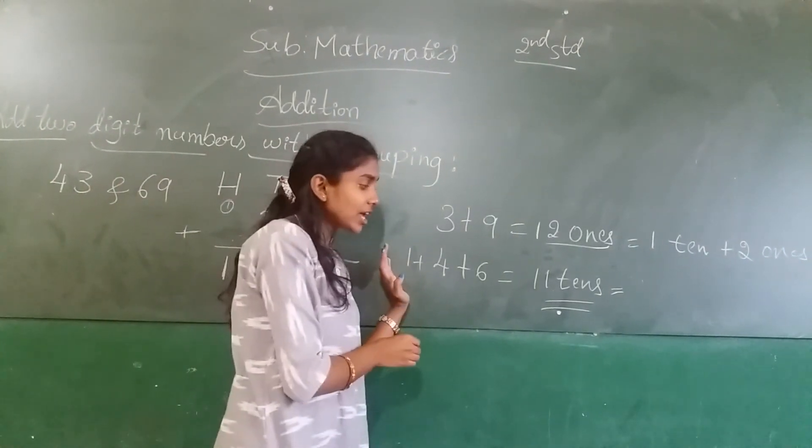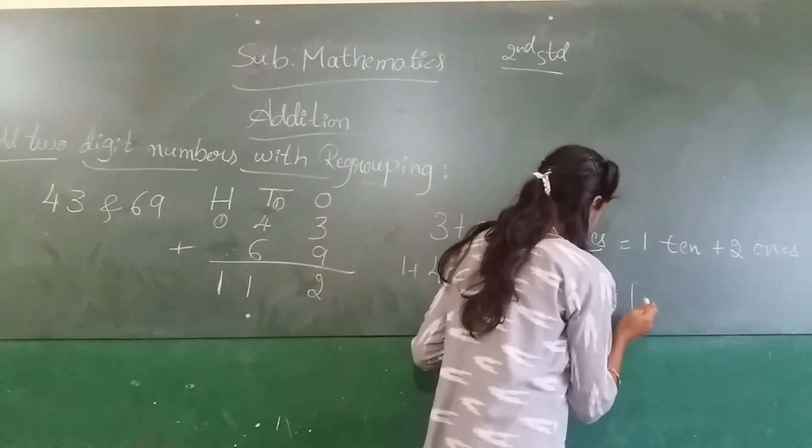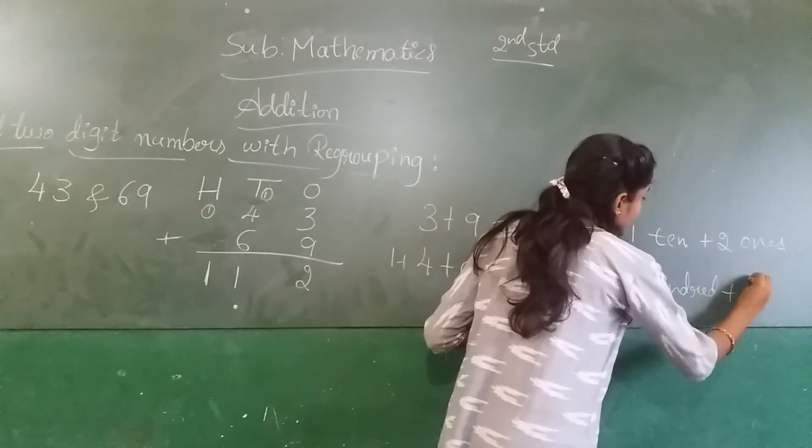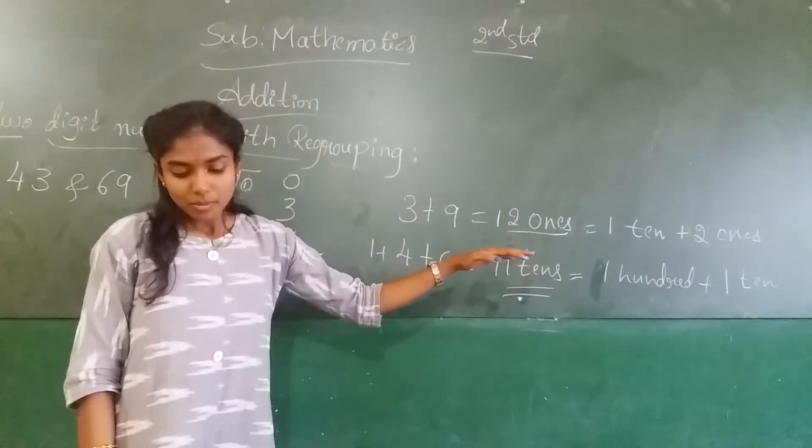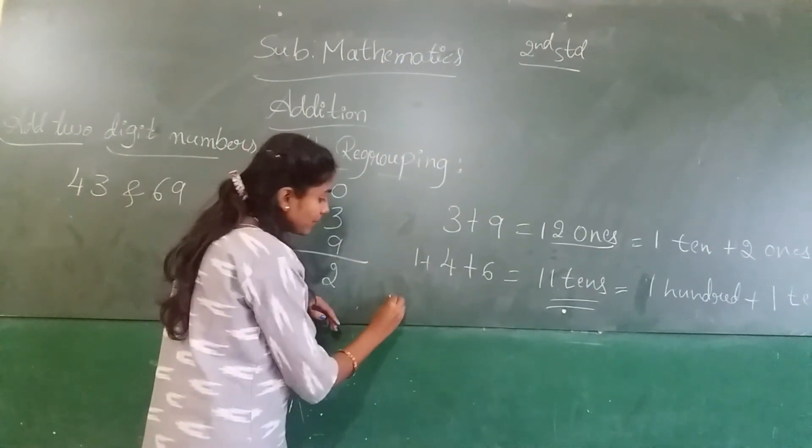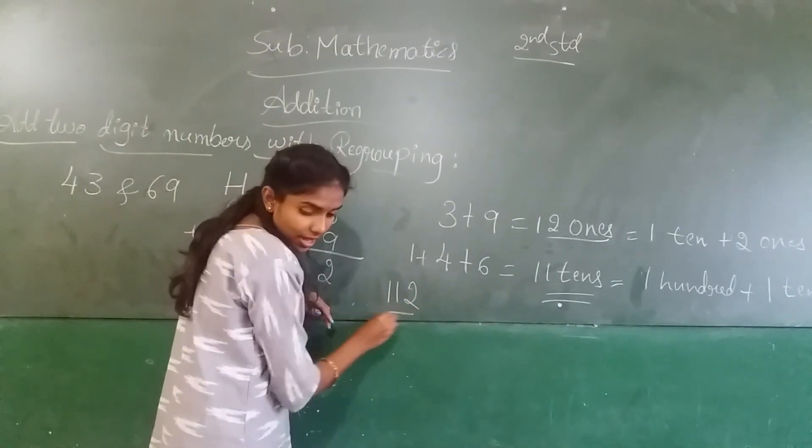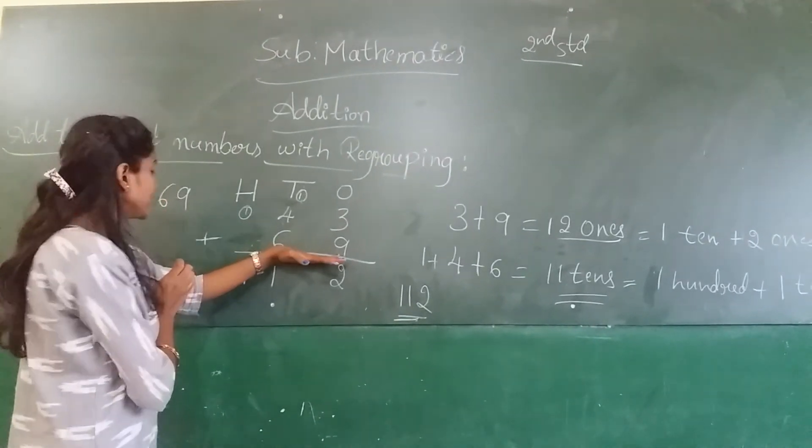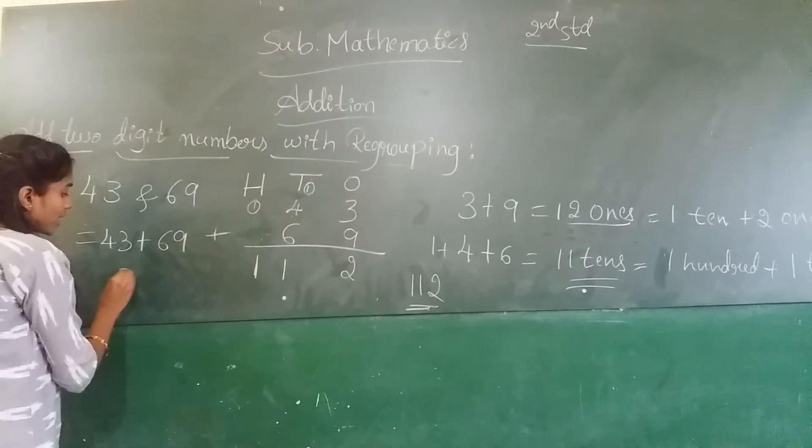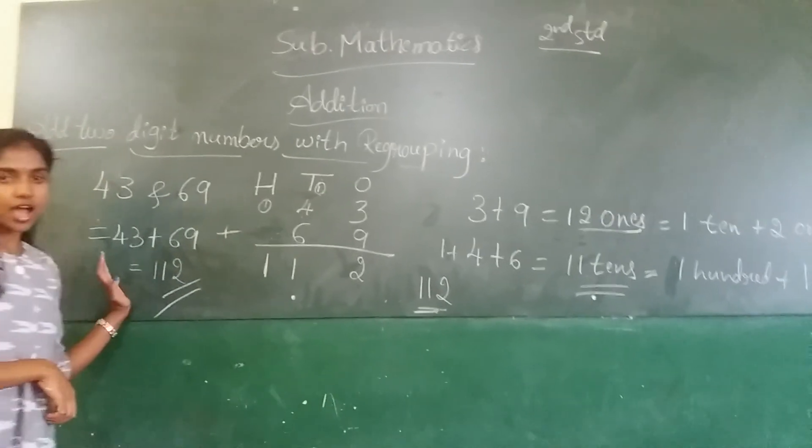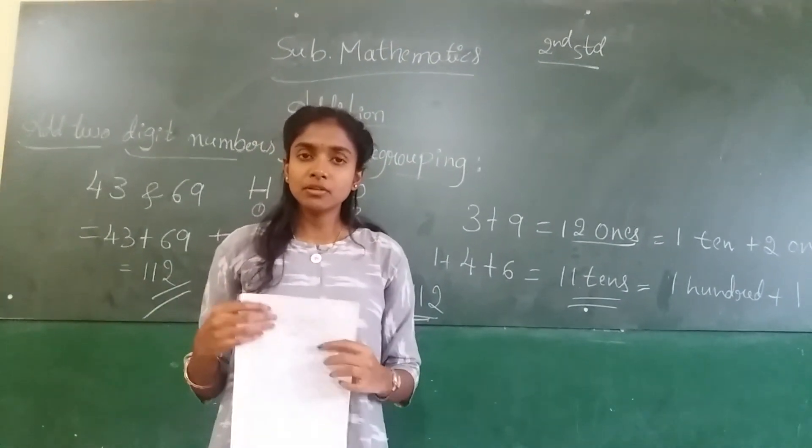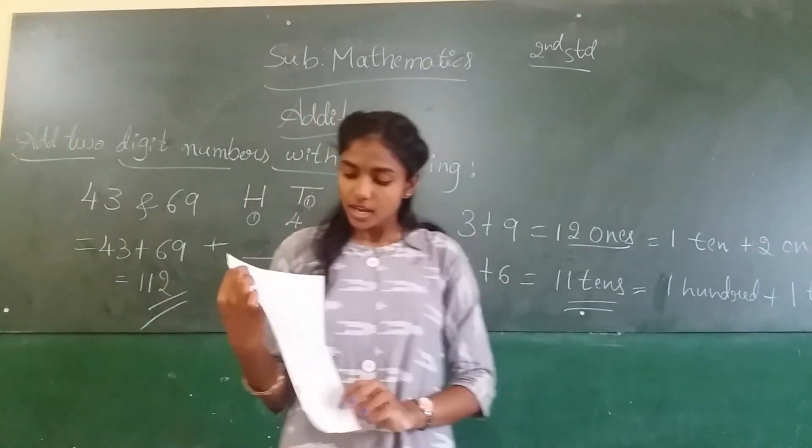Now, next column is 100. 100 plus 1, 10. So, this is the answer. 43 plus 69 equals to this is the answer.